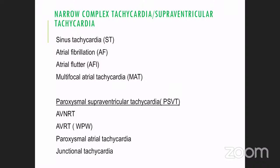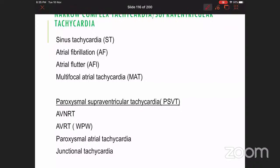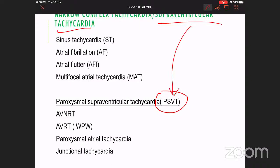Simple things like sinus tachycardia and arrhythmias like atrial fibrillation, atrial flutter, and multifocal atrial tachycardia all arise in the atrium. Consequently, the QRS complexes are narrow because downstream conduction is through the AV node and His bundle. A group of narrow complex tachycardias we label as paroxysmal supraventricular tachycardia. In common parlance, when people use the word SVT, they are usually talking about this, but the accurate term is paroxysmal supraventricular tachycardia.